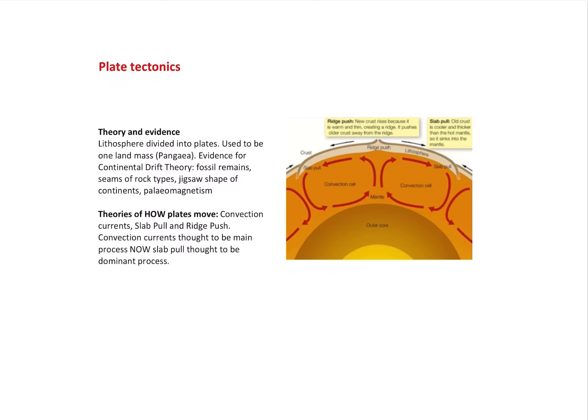So we've thought a bit about the background and how you might view the hazard. The next logical thing to talk about is plate tectonics. The theory of plate tectonics says the lithosphere is divided into plates. We know it used to be one landmass of Pangaea, and we've got evidence in the form of continental drift theory—fossil remains, seams of rock types match up, the jigsaw shape of the continents, paleo magnetism. They all support this idea that our continents used to be joined together as one.